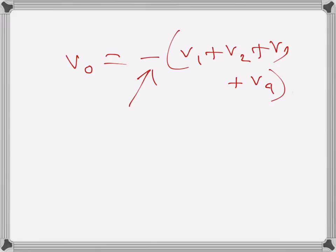The number of inputs can be more or less—can be two, can be more than four. I have just drawn this circuit for four input voltages, but this is how we can get an adder using an operational amplifier.